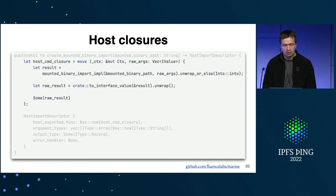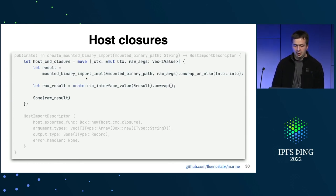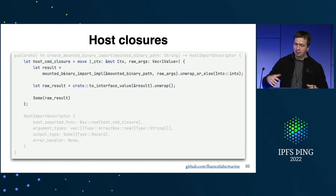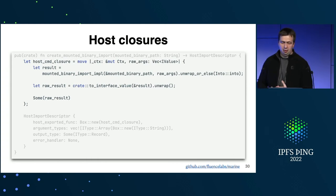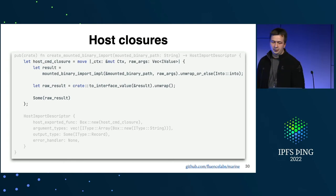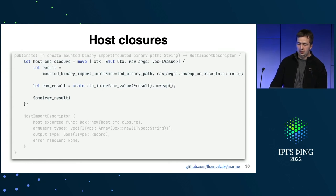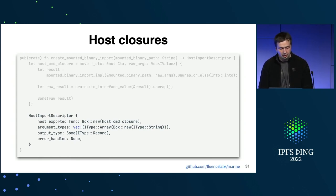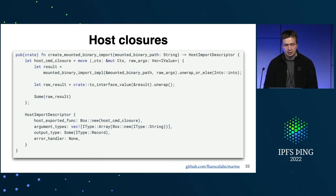Here you can see a descriptor of a host export function — a closure that takes some context and a vector of IValues. Let's consider how a mounted binary import could be written using this scheme. The closure receives arguments as a vector of IValues, calls the function that does some logic over those IValues, then converts the result back to IValue. It's only three lines — you don't need to care about memories, string representation as pointer plus size. You have handy IValues to work with. You do need to specify types, but it's not bad developer experience, and in some cases it's unavoidable because you need dynamic function linking.